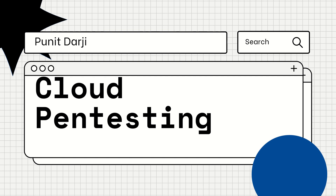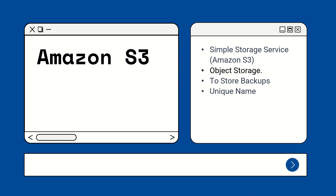Let's understand what is Amazon S3. Amazon Simple Storage Service, Amazon S3 is a public cloud service offered by Amazon Web Services. Amazon S3 provides object storage through a simple web service interface. It is widely used to store photos, videos, text files, documents, PDF files, and to store backups and large amounts of data as well.